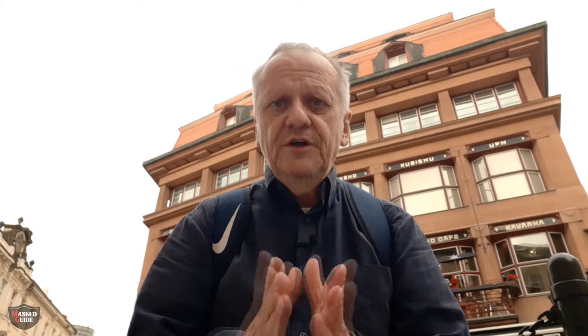The style of Cubism originated in France about 1907, and was pioneered by Pablo Picasso, who was Spanish, and Georges Braque, who was French, and they were inspired by Cezanne's ideas. Cubism is a style of art which aims to show all the possible viewpoints of a person or an object all at once on a 2D surface, and it's called Cubism because the items represented in the artworks look like they are made out of cubes and other geometrical shapes.